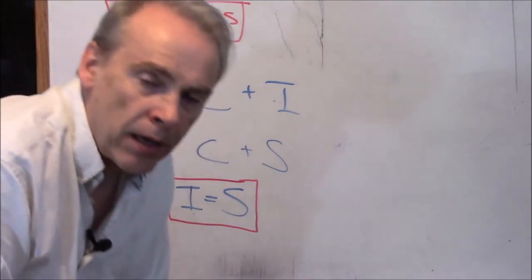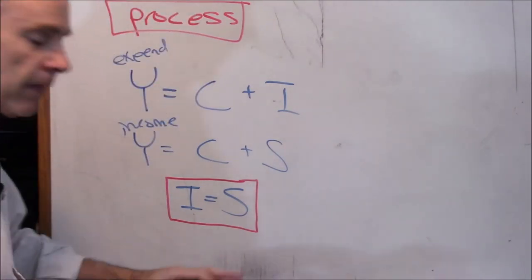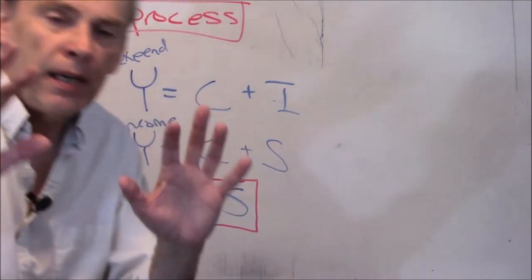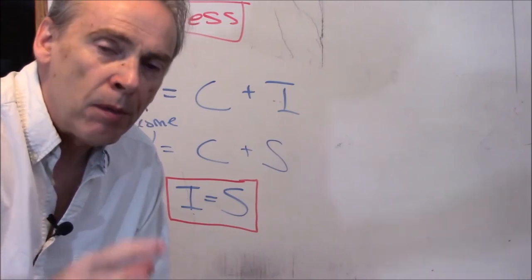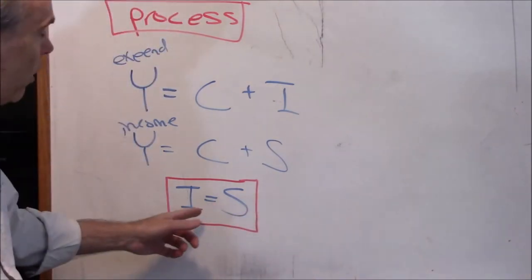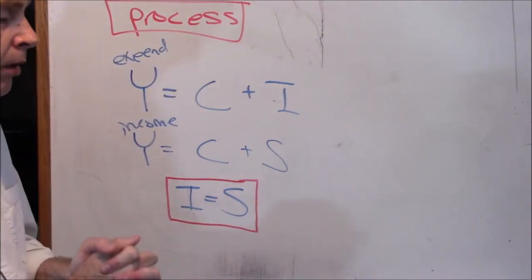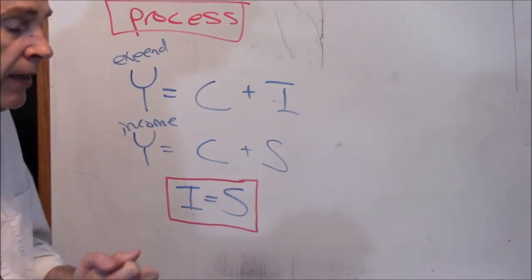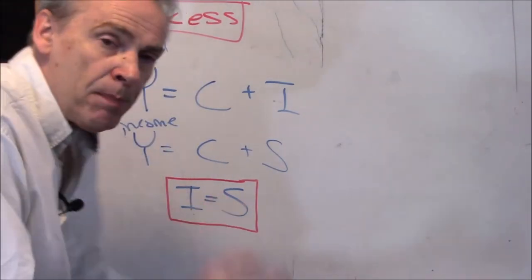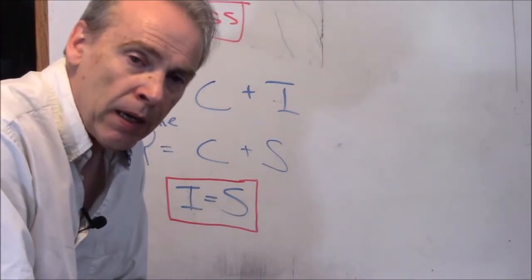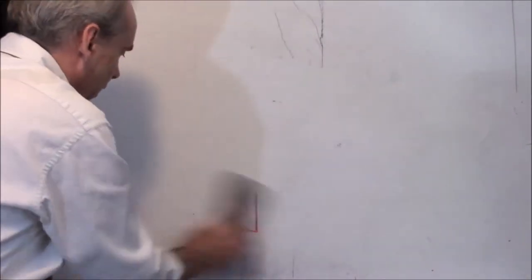How do they come to rest at equality? That is the question. And in this neoclassical model, the process by which they return to equality — if ever knocked out of equality — is a nice, happy one. Because it ends up keeping us at full employment, keeping us at a point where everyone who wants a job has a job.